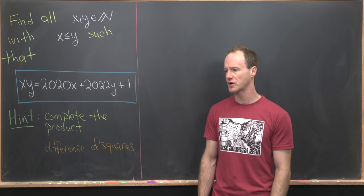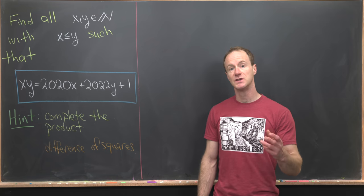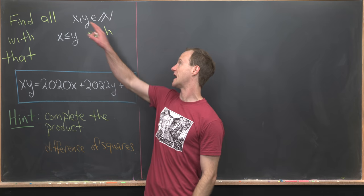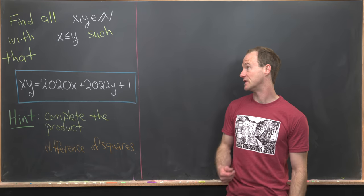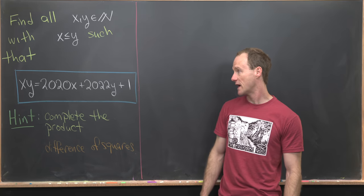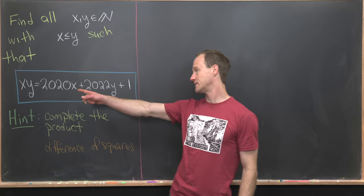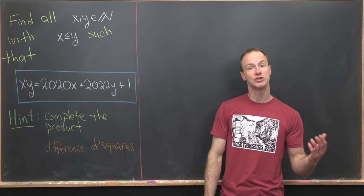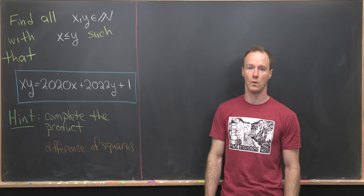And in addition, we're going to use a trick in this solution that we didn't use in a previous solution. So our goal is to find all natural numbers x and y, and by natural numbers I mean positive integers, satisfying x ≤ y and the following equation: xy = 2020x + 2022y + 1.